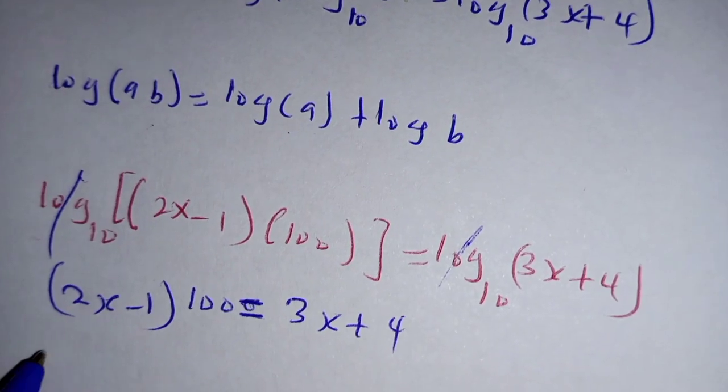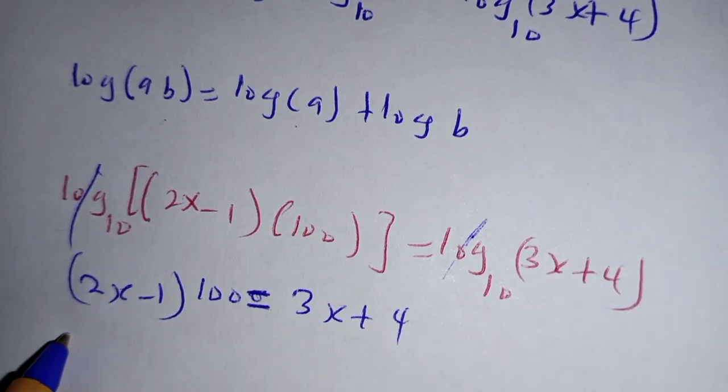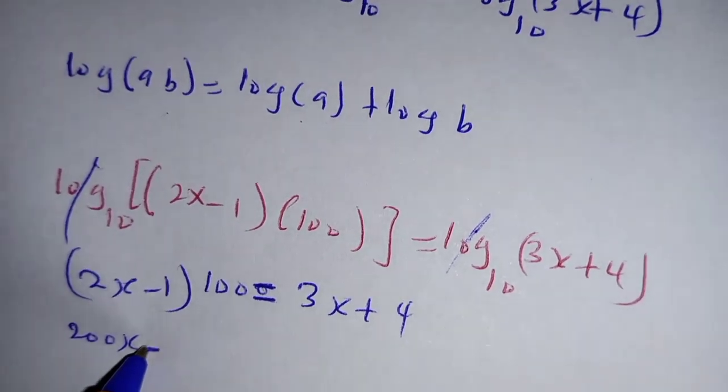Which implies that 2 times 100 is 200x, negative 1 times 100 is negative 100, which is equal to 3x plus 4.